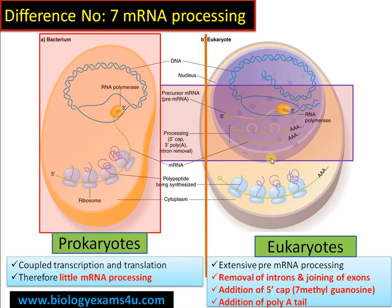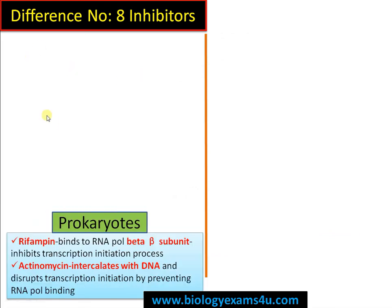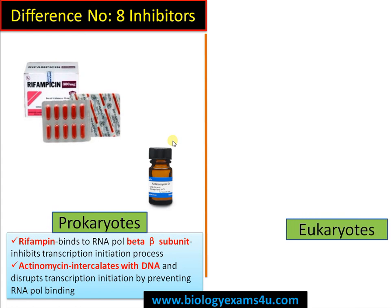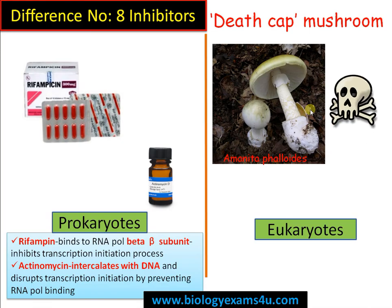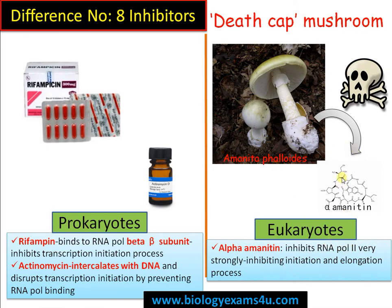Difference number eight is regarding inhibitors. Rifampicin is a drug that binds to the beta subunit of prokaryotic RNA polymerase and inhibits transcription initiation. Eukaryotic RNA polymerases are insensitive to rifampicin. Actinomycin D intercalates with DNA and disrupts transcription initiation by preventing RNA polymerase binding, affecting eukaryotes. Alpha-amanitin, a poison from the death cap mushroom (Amanita phalloides), strongly inhibits RNA polymerase II and also inhibits RNA polymerase III, slowing translocation of RNA and DNA.